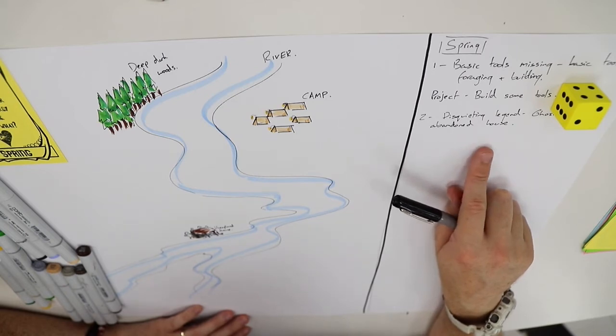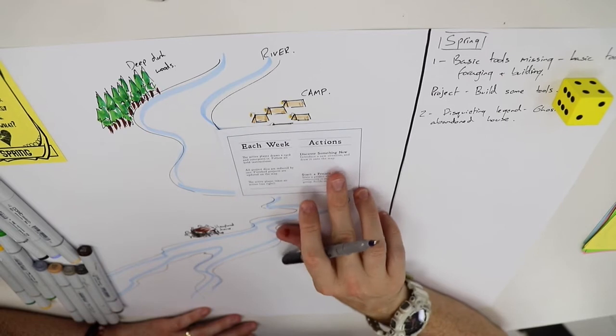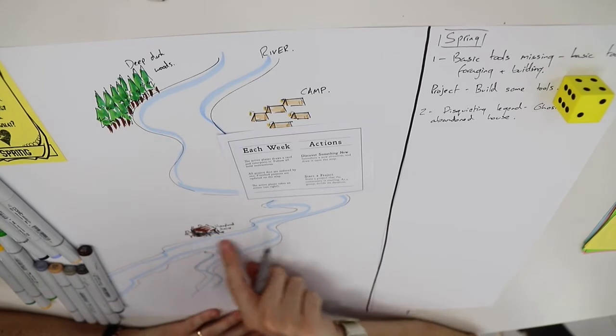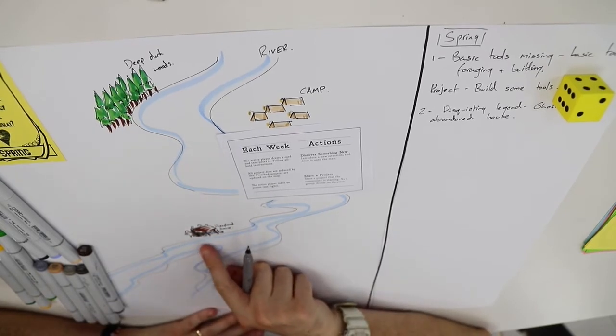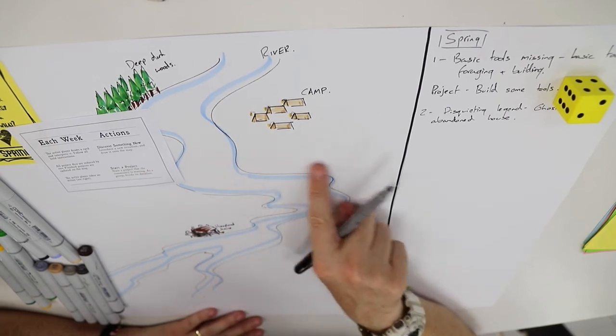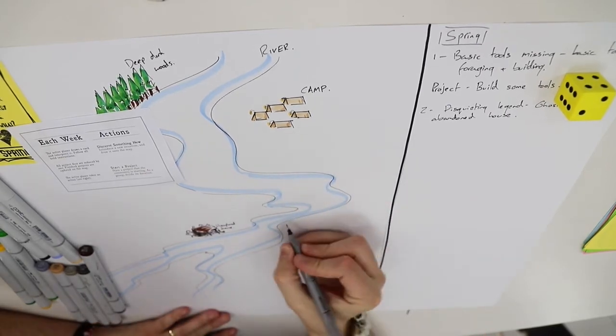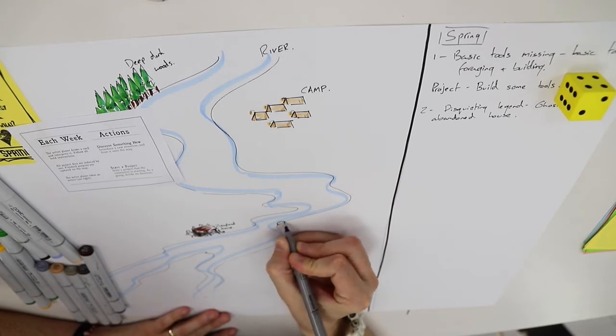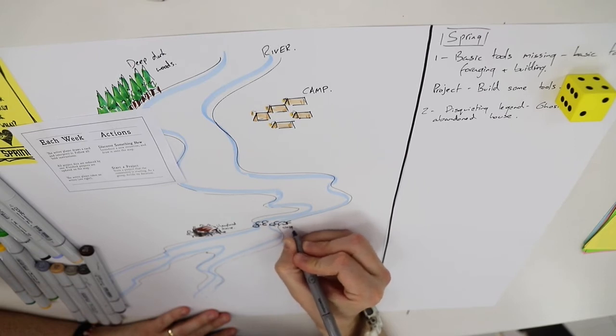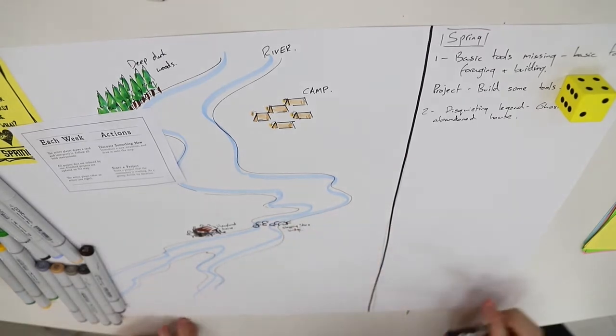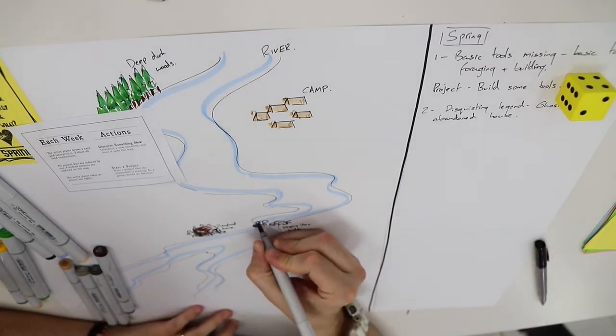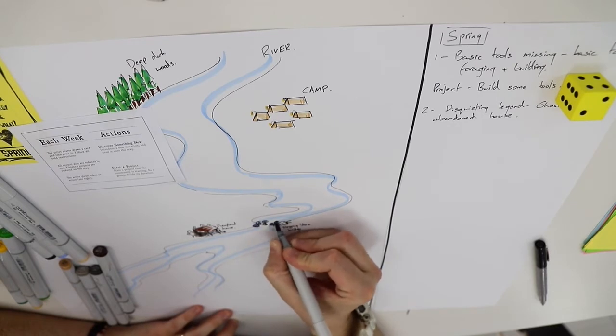I'm going to my actions now, so I'm going to discover something new. I'm going to say the rumors or the disquieting legend about the ghosts and the house over here have prompted people to maybe want to explore this area a little bit more. As some people have started to wander down the river, what they've noticed is a series of stepping stones on the river. I'm just going to make a note: "stepping stone bridge." So that's an example of discovering something new and what that might look like on the map - something which permanently can change the map and something that can be utilized afterwards.